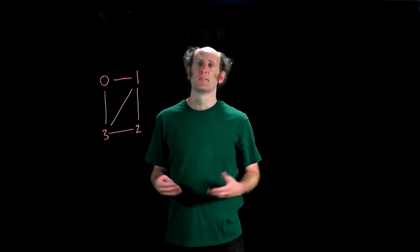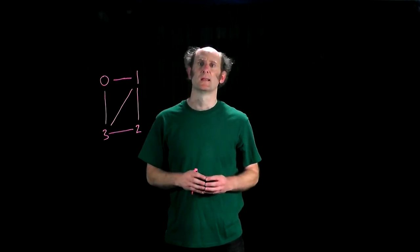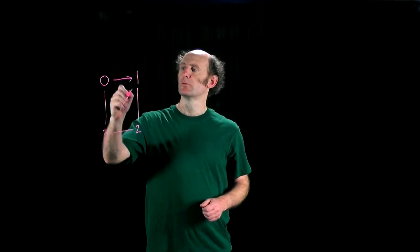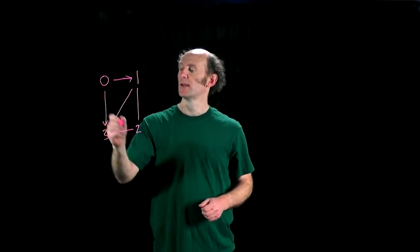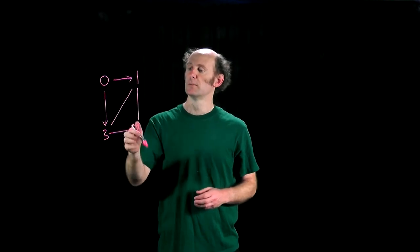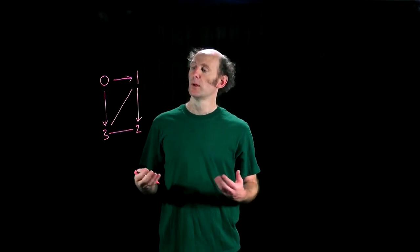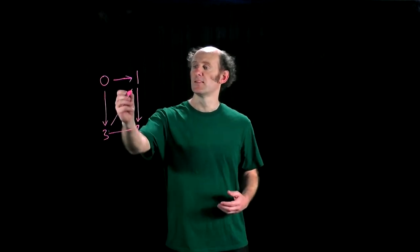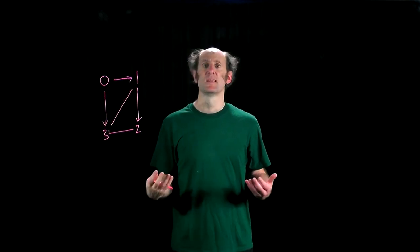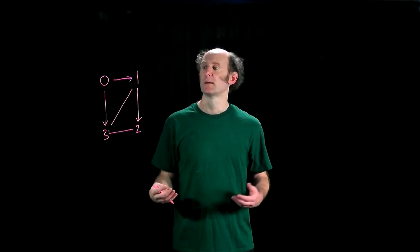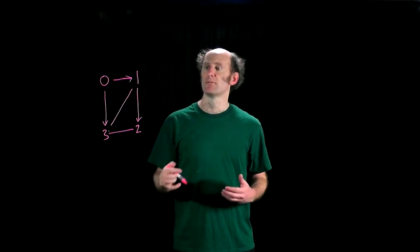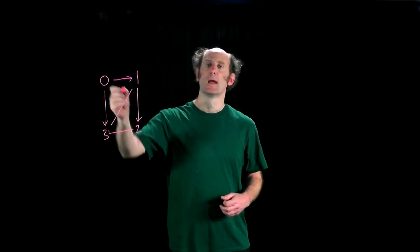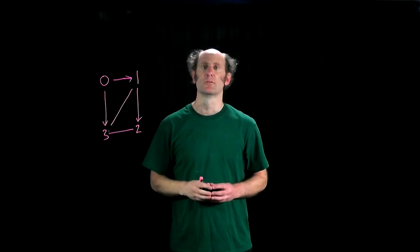Let's look at our example again, this time performing a BFS starting at node 0. From 0 we'll cross the edge to 1 and to 3, then from 1 we'll cross the edge to 2. At which point we've visited everything, but we also encounter this edge here from 1 to 3, which in this case is now a cross arc. And so we've identified the cycle from 0 to 1 to 3 and back to 0, which is the shortest cycle through 0.